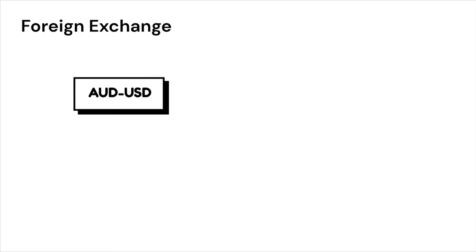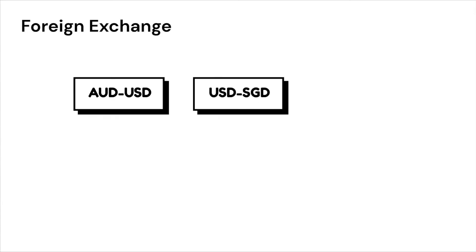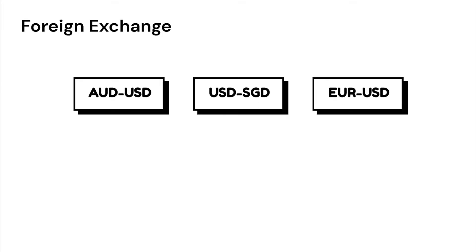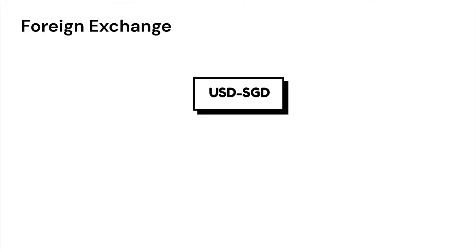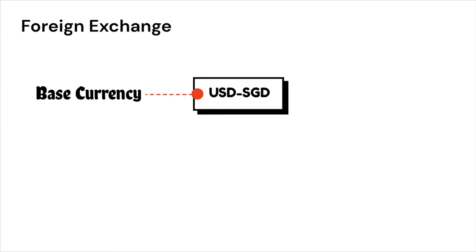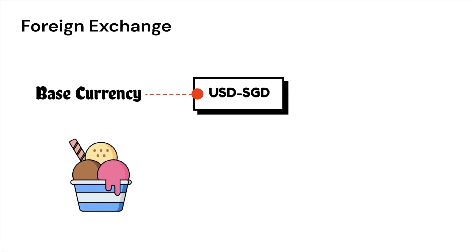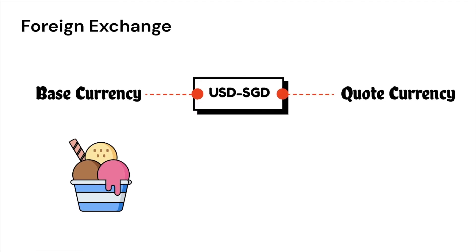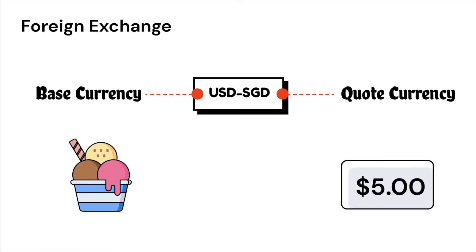The foreign exchange market always quotes currencies in pairs, for example AUD to USD, USD to SGD, or EUR to USD. Let us take USD to SGD as an example. The currency quoted first is called the base currency — think of this as a product like an ice cream. The currency quoted second is called the quote currency — think of this as the price of the ice cream.